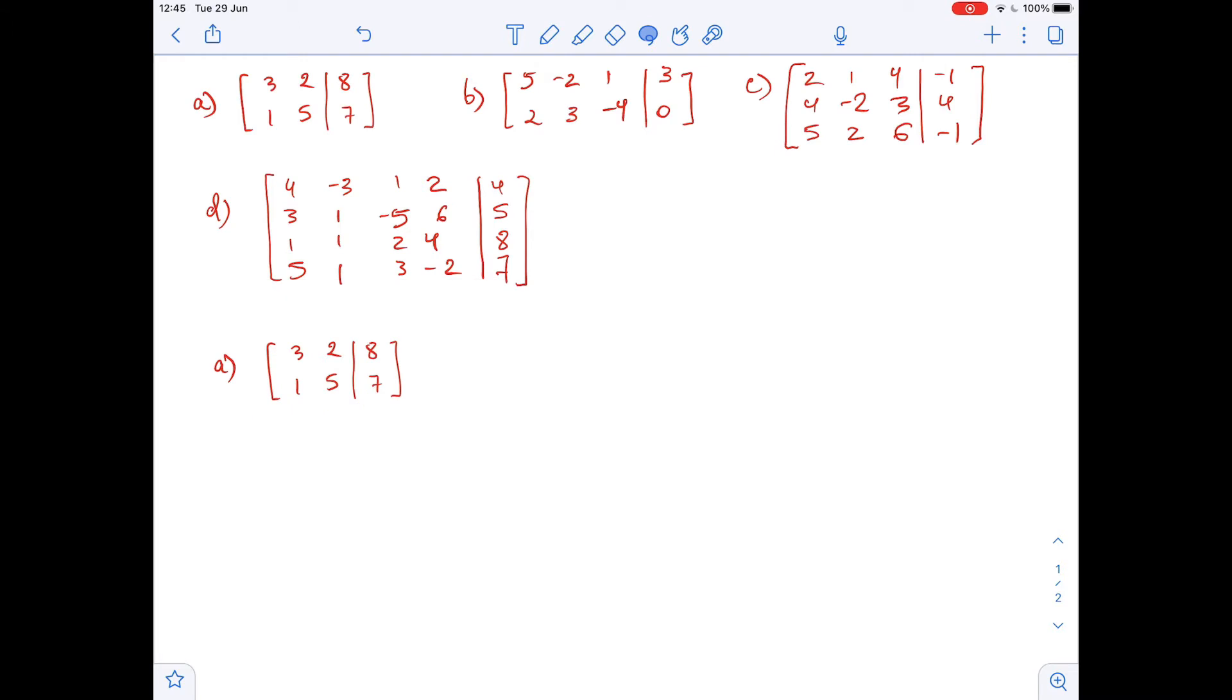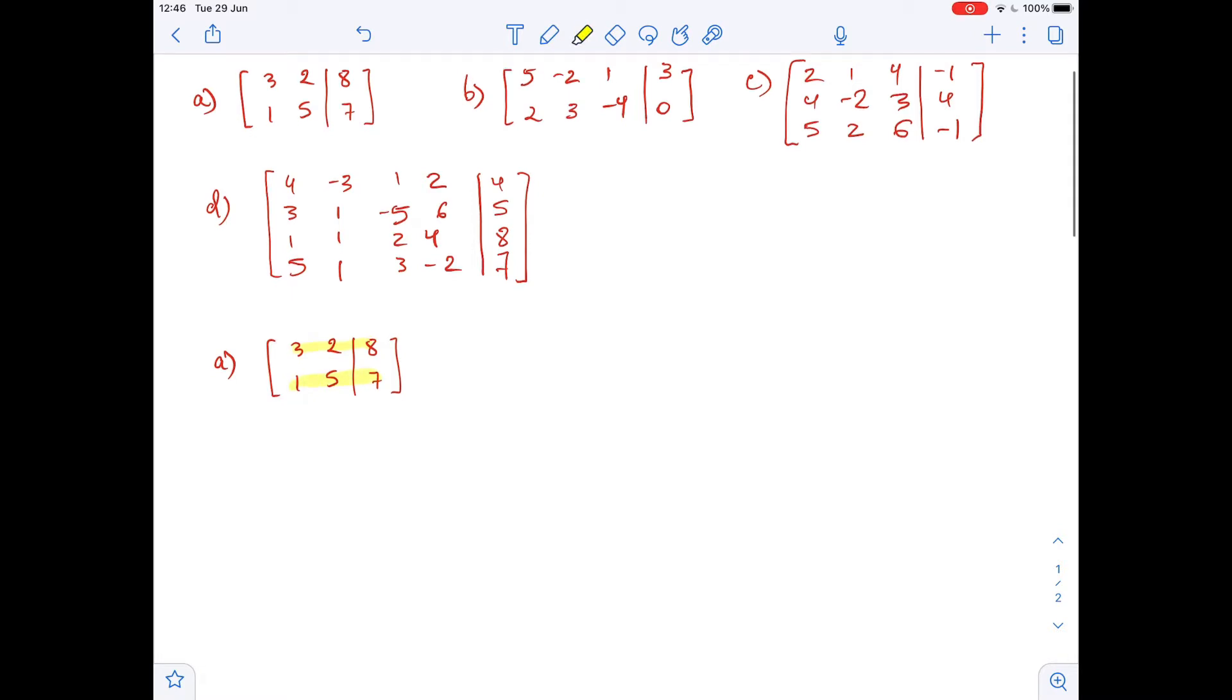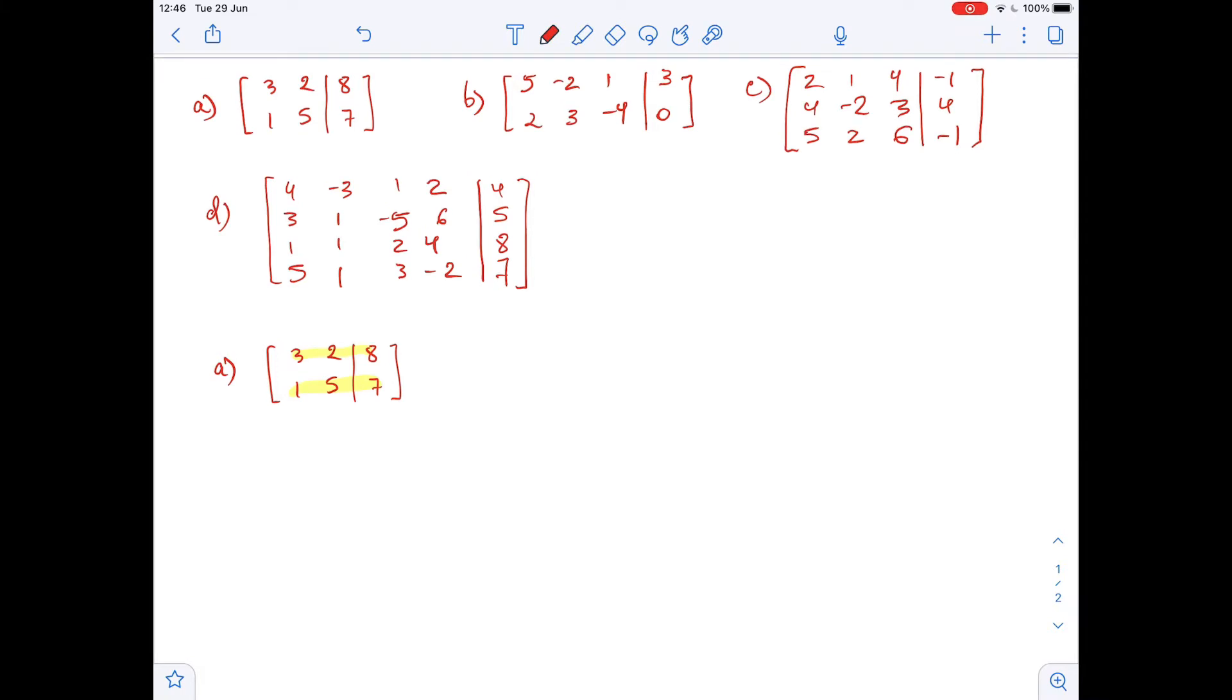So in an augmented matrix, each row represents one equation of the system. So here we have two rows, that means we will have two linear equations in our system. And each column represents a constant term or variable. So since we have two columns on the left side of the matrix, that means we will have two variables. Let's call them x1 and x2. And the entries of the matrix represent the coefficients in front of these variables.